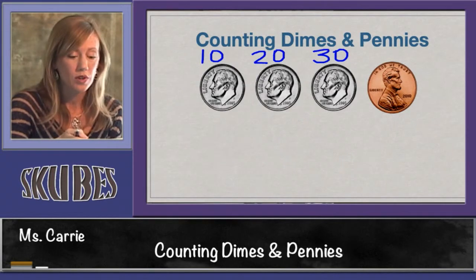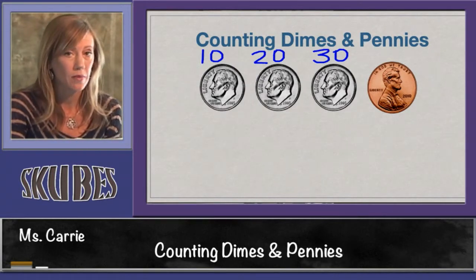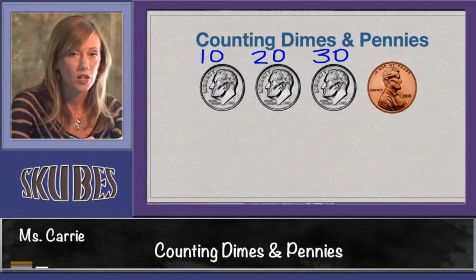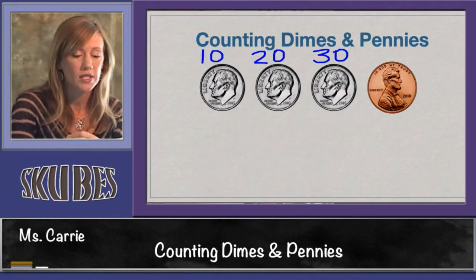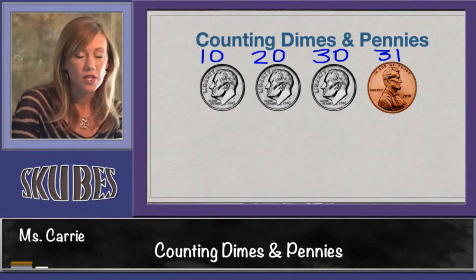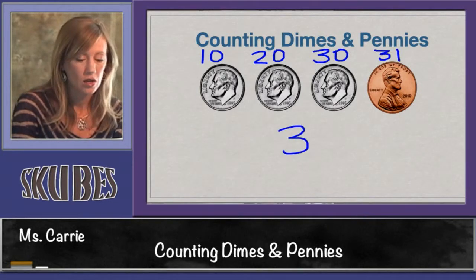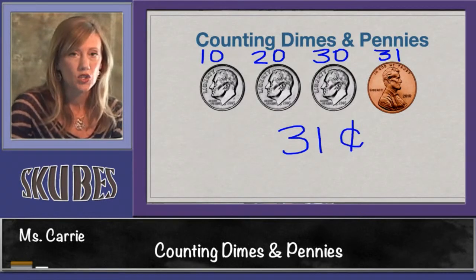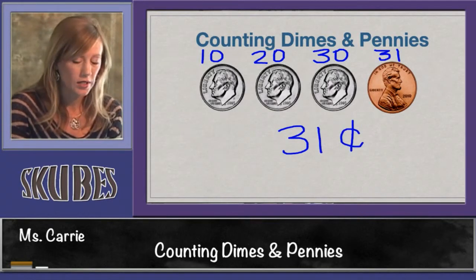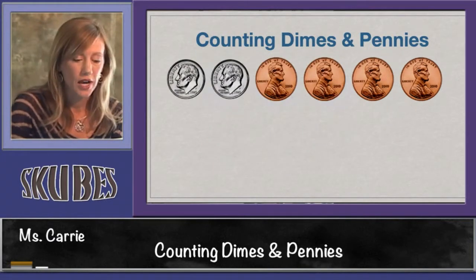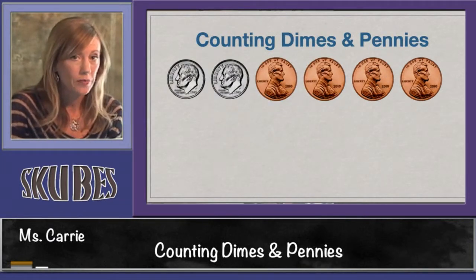Now we're no longer counting by tens — we've stopped with our dimes and need to switch over to counting by ones. So ten, twenty, thirty cents, plus one more cent would make thirty-one. This group of coins equals thirty-one cents. Let's try another group of coins.